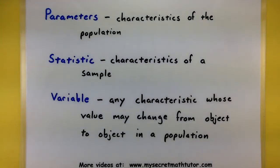A parameter is a characteristic of the population, and a statistic is a characteristic of the sample. Notice how parameters are associated with populations, and statistics are associated with samples.